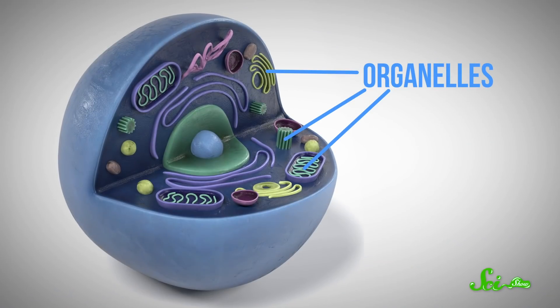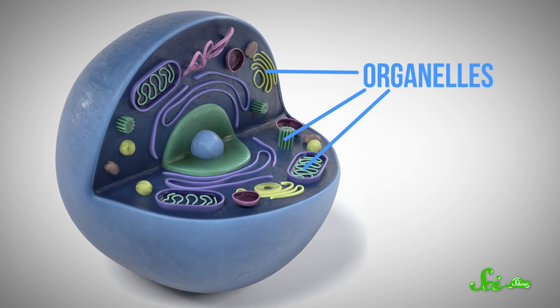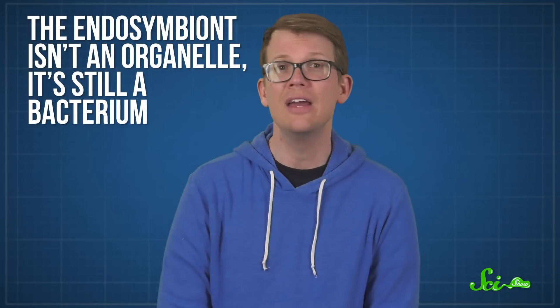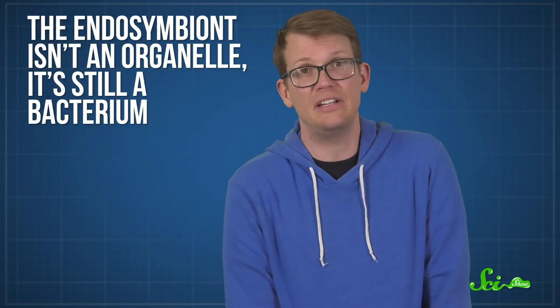Also, there's an intriguing difference between the endosymbiont and mitochondria. When mitochondria evolved, they started out as swallowed bacteria that gradually ditched some of their genome and integrated more closely with their host cell. And then eventually, they became an organelle, or little organ of their host cell. But in the Swiss eukaryote, the endosymbiont isn't an organelle, it's still a bacterium. And the researchers think it may be on its way to becoming an organelle.